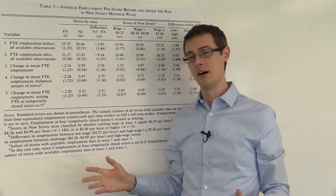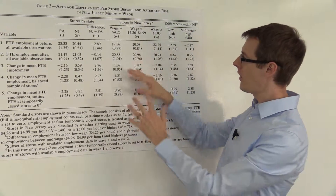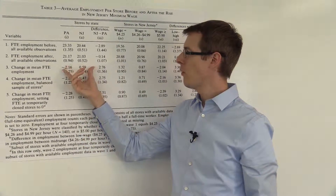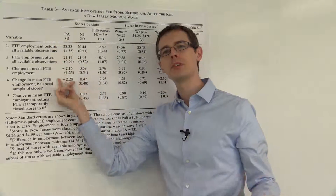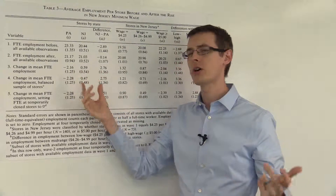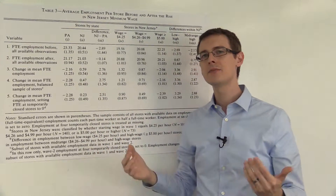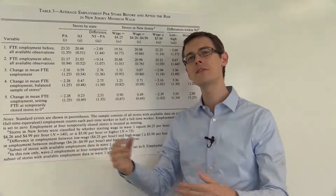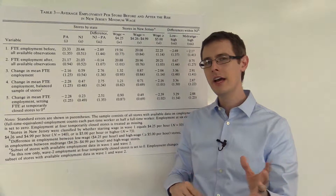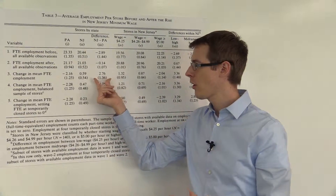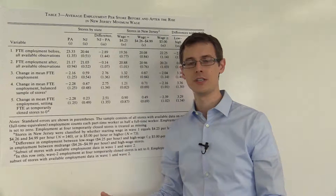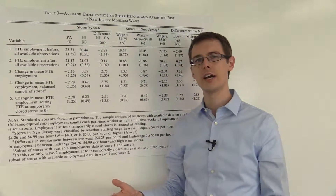So overall, we see that we've done a bunch of robustness checks. And even if we use a different control group for getting that common trend, we see the same finding as our initial main finding — that the minimum wage law actually increased employment by about three people. The reason we had to go through all these other numbers is that we don't want to just do one analysis based on one idea — using Pennsylvania as our control group — because maybe that's not the true answer. Maybe one of our assumptions wasn't correct, and it's very hard to check these assumptions. So we have to do a bunch of different kinds of analysis to tweak our assumptions and hope that our conclusions don't change a lot. That's the idea of robustness and robustness checks.